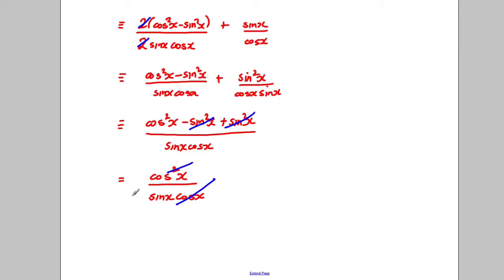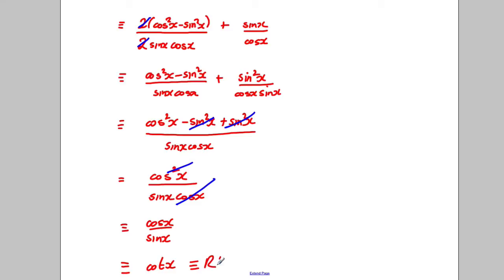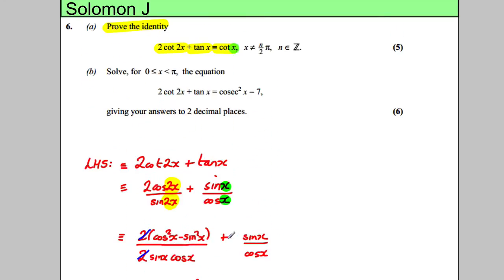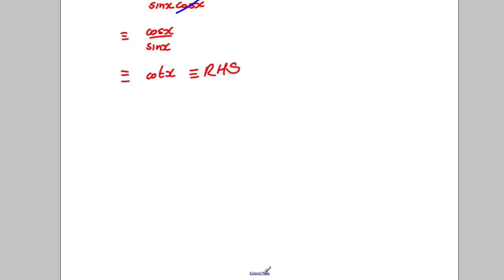The negative sin²(x) cancels with the positive sin²(x), leaving cos²(x) over sin(x)cos(x). One factor of cos(x) cancels top and bottom, giving cos(x)/sin(x), which is equal to cot(x) — the right-hand side. So that's what we were trying to show.